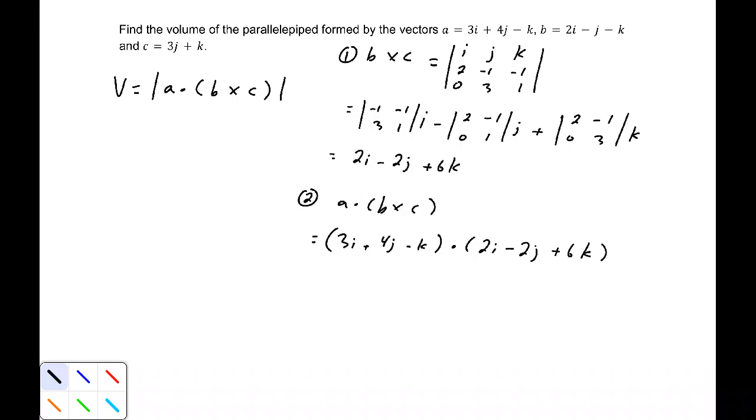And if writing it in this notation makes you feel a little odd, it actually does me, I'm going to write this in component form: <3, 4, -1> dot <2, -2, 6>.